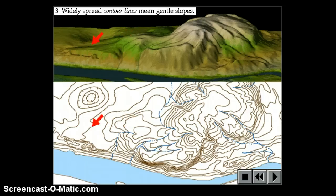Rule number three, widely spread contour lines mean that you're on gentle slopes that are approaching being flat. And the further apart those lines are, the flatter it is. In the top picture, you can see the arrow showing you the gentle slope. And in the bottom picture, it's showing you that the contour lines are fairly far apart.